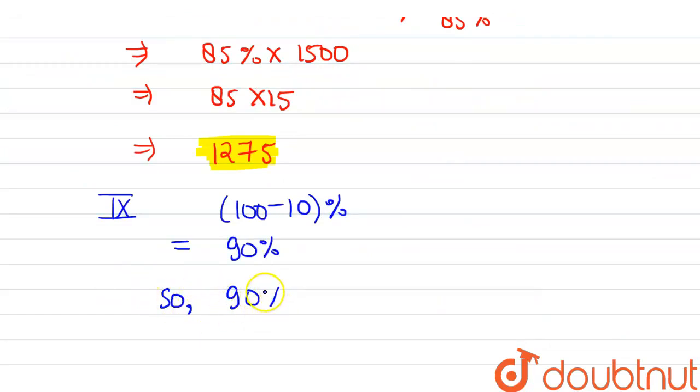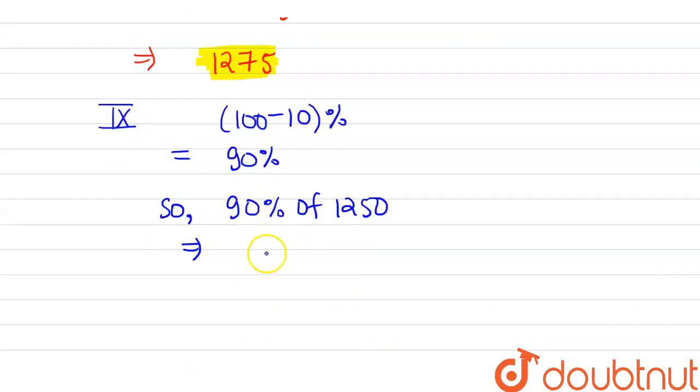So 90% of 1250. When we solve this, we get 90 times 125, which equals 1125. So you get this data for class 9.